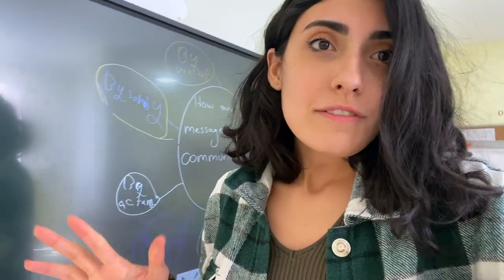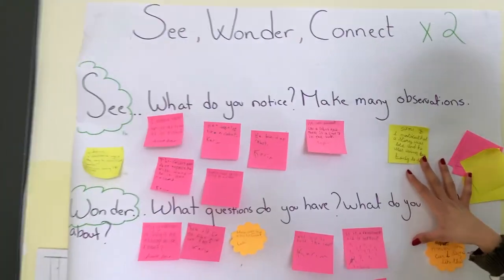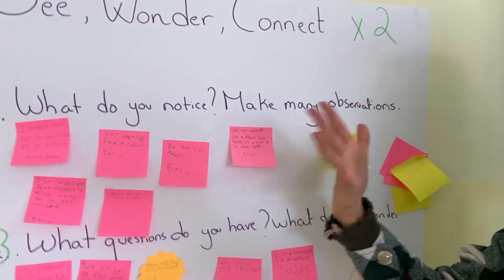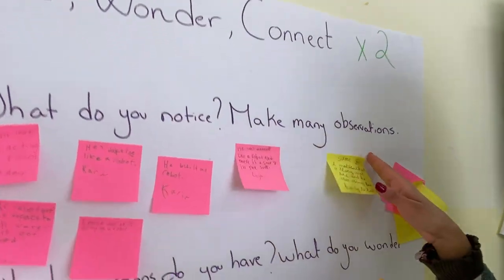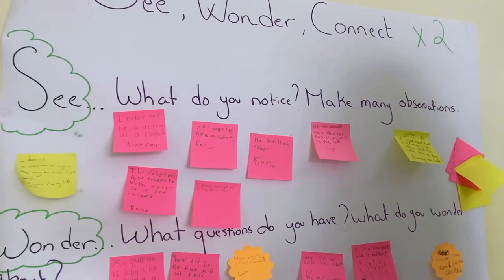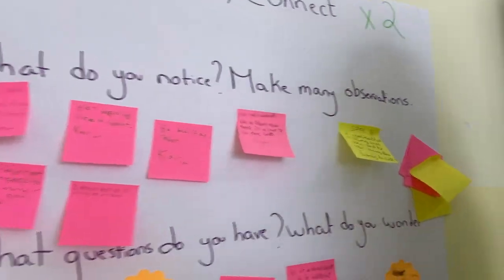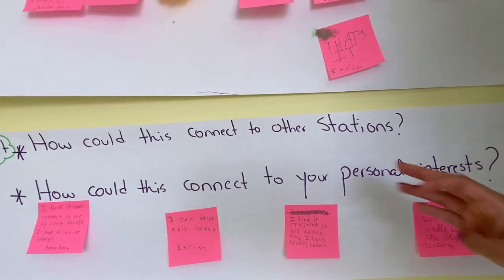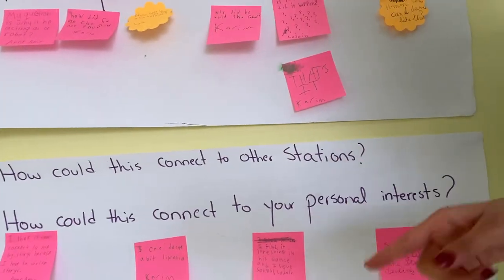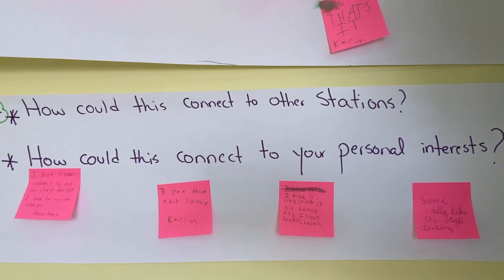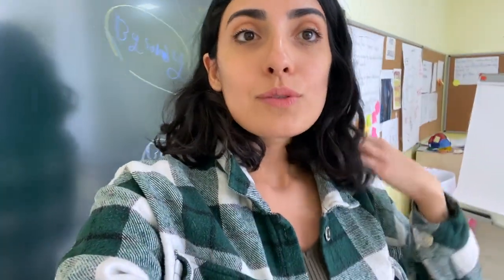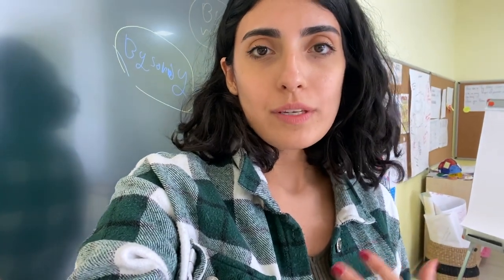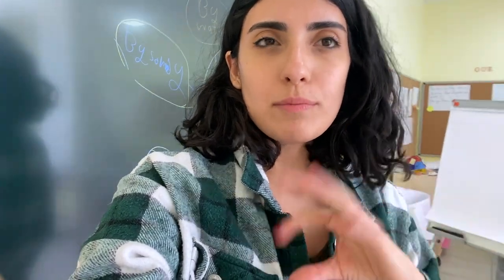They watched the video and filled in a 'See–Wonder–Connect' thinking routine. The questions were: what do you notice, what do you wonder about, and how does this connect to the stations and to your personal interests. They had several stations rotating around. The first station had them watch a video about a child who tells a story through dancing — our theme is about how to express ourselves.